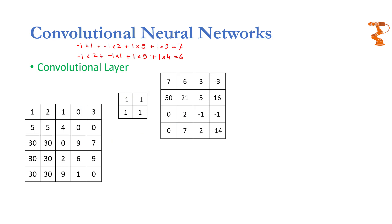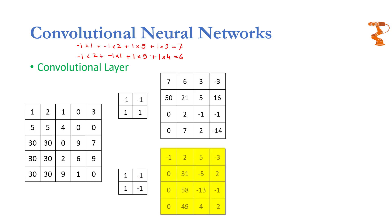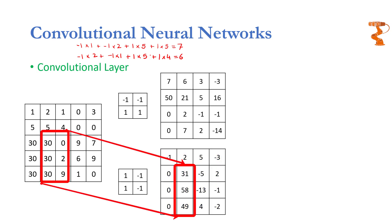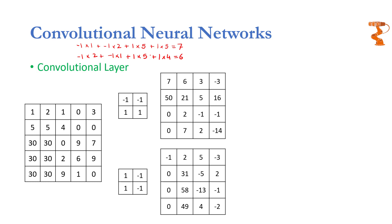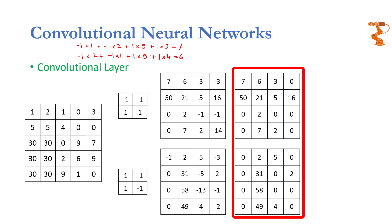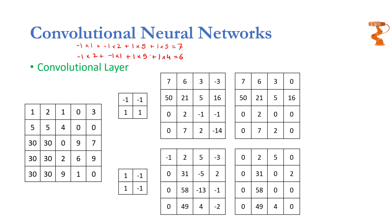Similarly, the same input image would be passed through another filter of the same size but with different coefficients to extract a different feature. Following the same procedure, we get an output where this filter has produced larger output at locations of vertical edges. Therefore, this filter extracts vertical edges — a different feature than the first one. The output of each individual mask is then passed through a ReLU, which chops all the negative values, leaving only activated positive values. In the same fashion, the input image is passed through multiple filters and the outputs from all filters go through the ReLU.